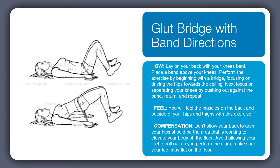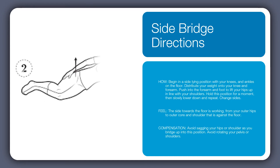For the glute bridge with band, lay on your back, bend the knees, and slide the heels in close to the buttocks with feet on the floor. Loop the band around the hips, holding the band down with your hands. On your inhale, lift the hips up in line with the knees, pressing through the feet gently and feeling the resistance against the band. You can hold here or do reps.